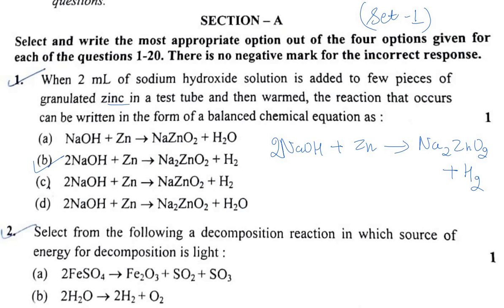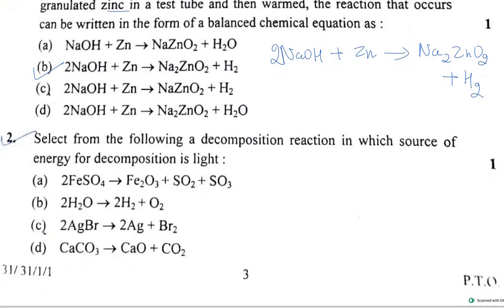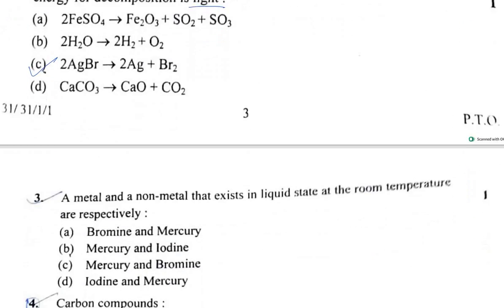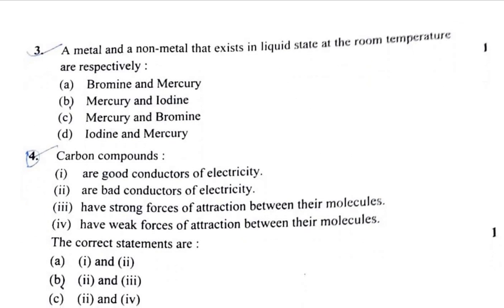Question 2: This is a decomposition reaction through light. In this case, you have to pay attention to AgBr, which is option C. Question 3: The metal and non-metal that exist in liquid state — the metal is mercury, which is option C.